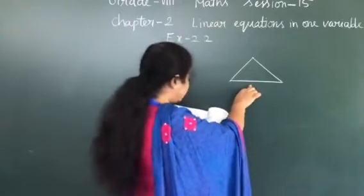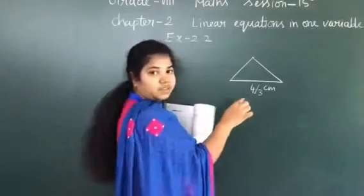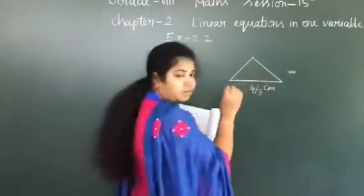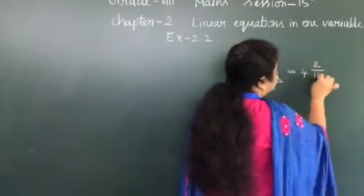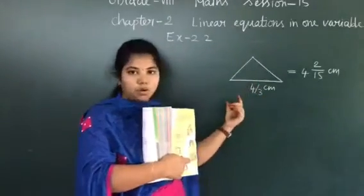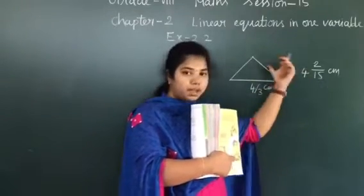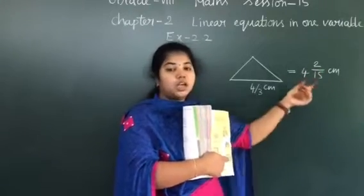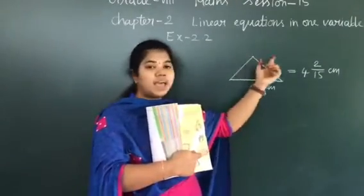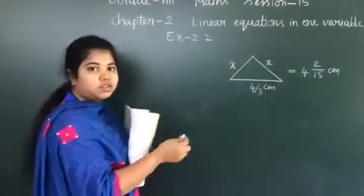The base of the isosceles triangle is given as 4/3 cm, and the perimeter of the whole isosceles triangle is given as 4 and 2/15 cm. Perimeter means adding the boundaries — all three sides. We are supposed to find the length of either of the remaining equal sides. I do not know these two sides, so let me keep that side as x. So these two sides will be x.